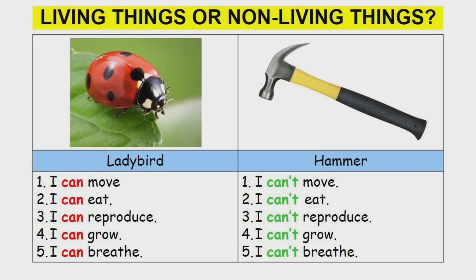Let's look at another example. We have a ladybird and a hammer. The ladybird can move, can eat, can reproduce, can grow, and can breathe. This means the ladybird is a living thing, and the hammer is a non-living thing.